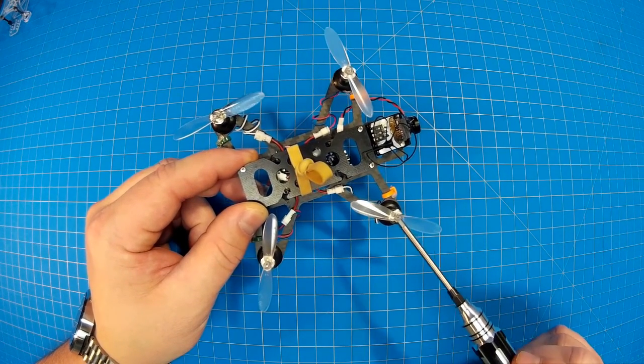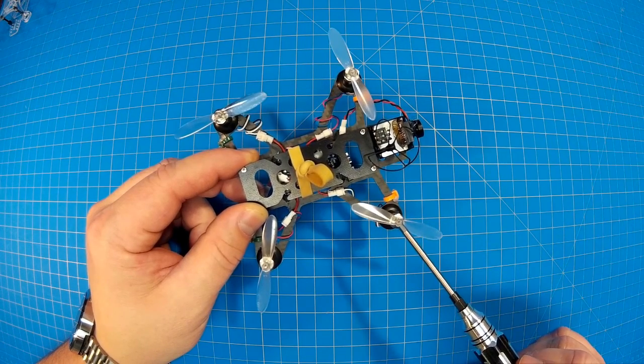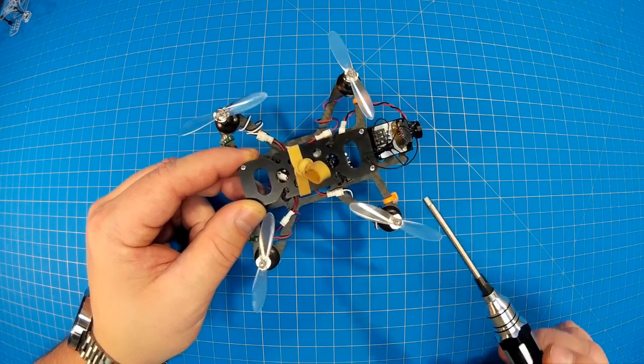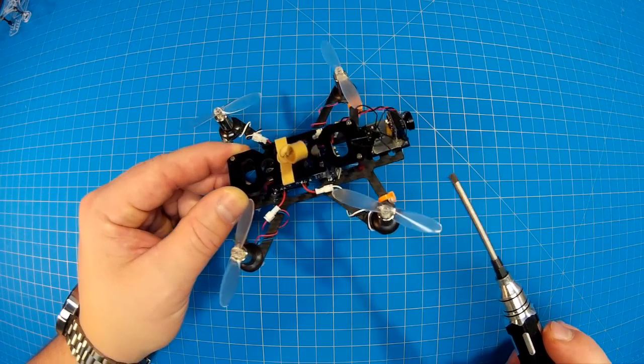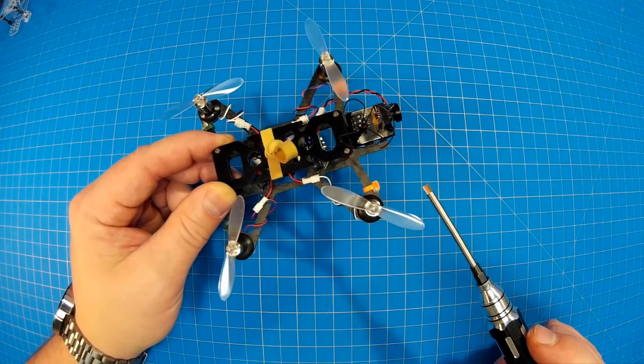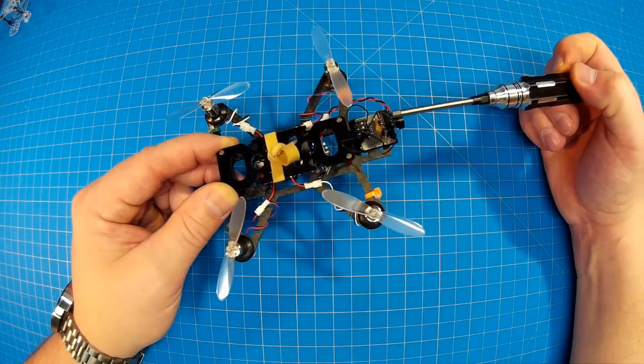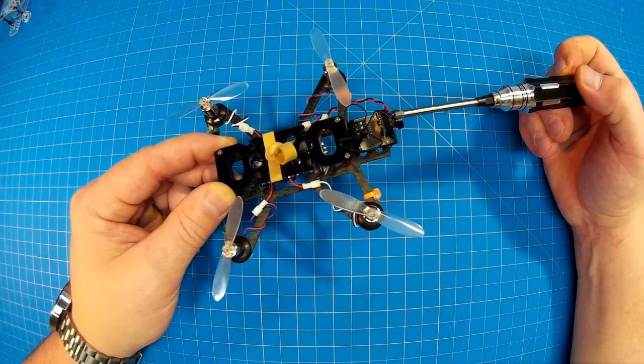And I did order two more sets of Hobby King motors just to see if the ones I got weren't very good performers or not. Something else that I've noticed that when this tends to crash, it does end up upside down a lot. So it's important to try to protect, in my case, my antenna provides some protection.